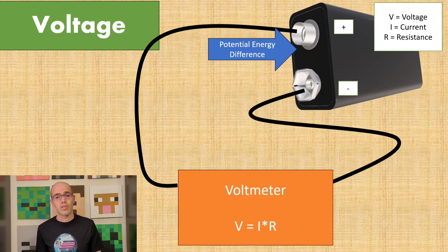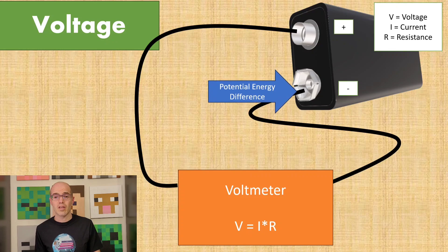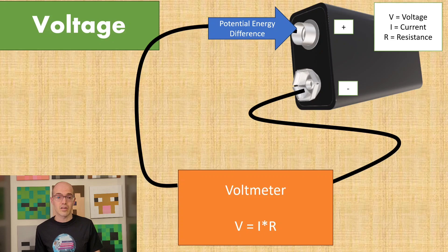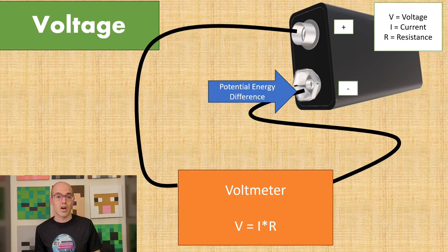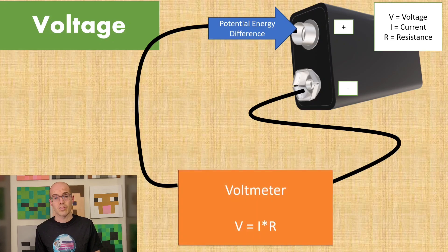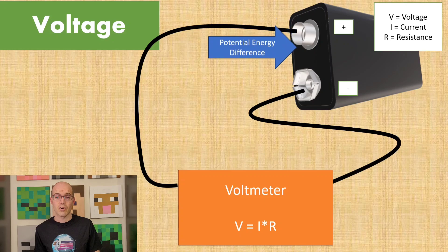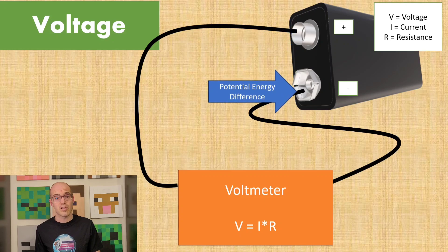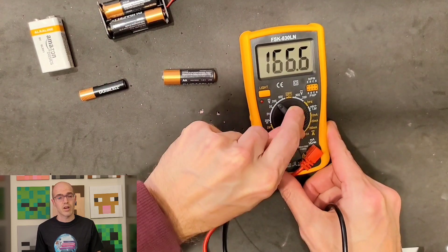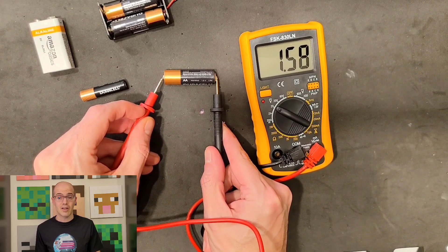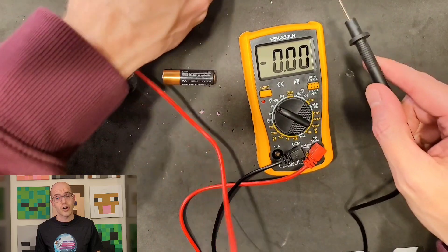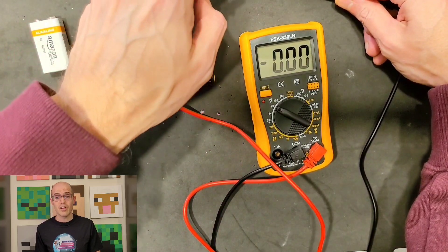Voltage is the driving force that pushes electrical charges, such as electrons and free ions, throughout a conductor. In conductors such as metals, voltage creates an electric field that causes the free electrons to move in a particular direction. When a voltage is applied across a conductor, the electrons experience a force due to the electric field. This force causes electrons to drift opposite to the electric field, resulting in a net flow of electrons which constitutes an electric current. The greater the voltage applied, the stronger the electric field and the faster the electrons move.